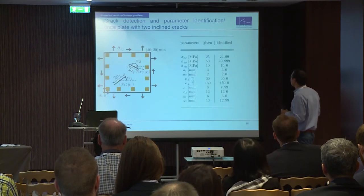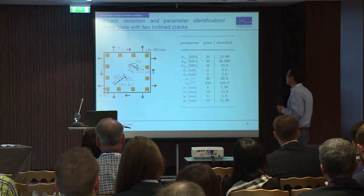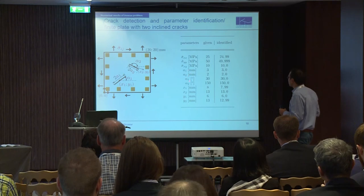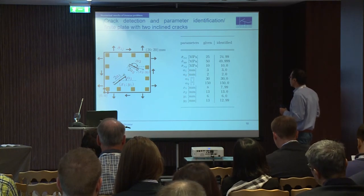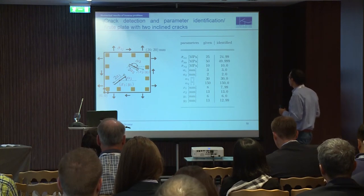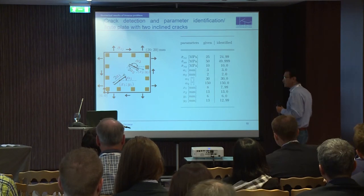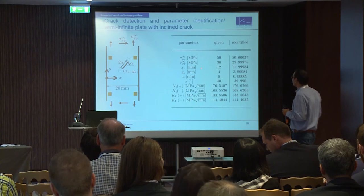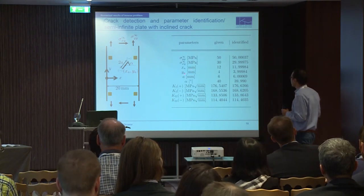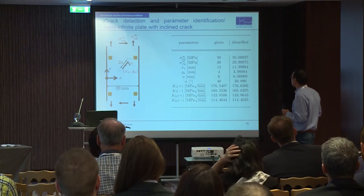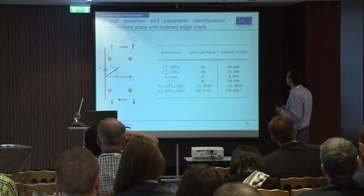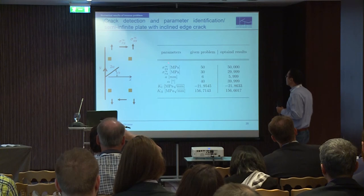Another example is crack detection and parameter identification in a finite plate with two inclined cracks. We have here the boundary loads, both crack lengths, both crack inclinations, and both crack positions as unknowns. The given problem and identified results are shown here, and we can see that they are similar. The next example is the semi-infinite plate with an inclined crack. The unknown parameters are the boundary load, the crack length, the crack inclination, and both stress intensity factors. We can see that the given problem and the identified stress intensity factors are similar. We also have a semi-infinite plate with an inclined edge crack, and again the given problem and both stress intensity factors agree well.